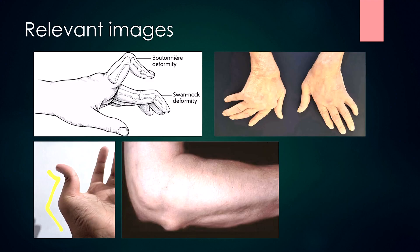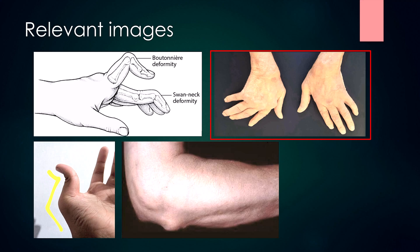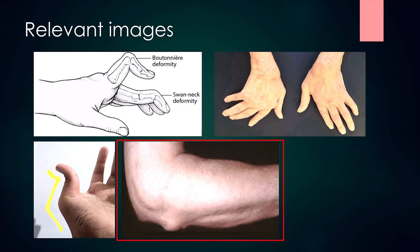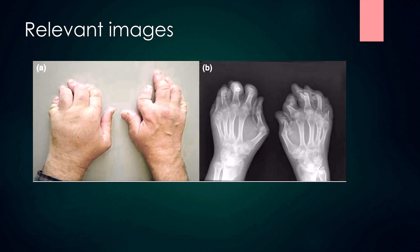These are some relevant images. The first image shows boutonniére deformity and swan neck deformity, and the second shows ulnar deviation of the wrists. The third image shows the Z deformity of the thumb and the fourth shows a rheumatoid nodule around the elbow region. Another image shows arthritis mutilans — the small hand joints of this patient are almost completely destroyed, making daily activities very difficult.